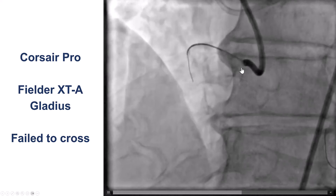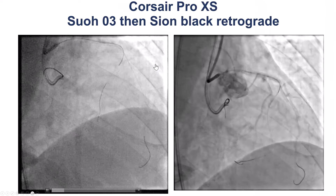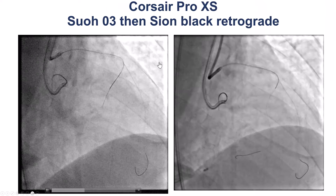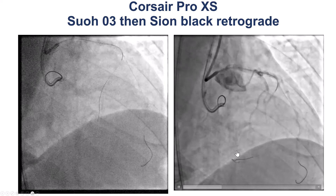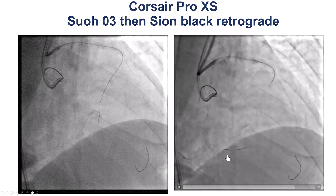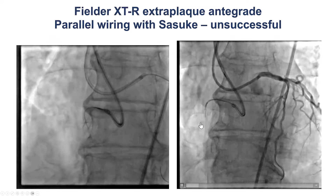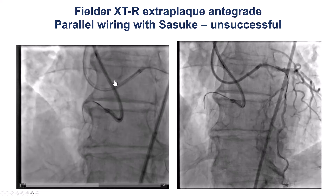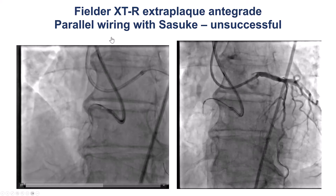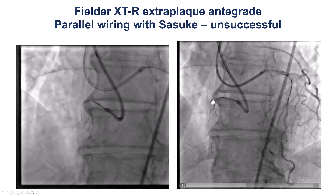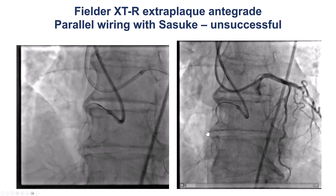We tried antegrade wiring with polymer-jacketed wires, but this was not successful. So we switched to the retrograde approach. Despite trying a SU-03 as well as a Sion Black guidewire, we were actually unable to cross distally. We did have a safety wire into the LAD for protection. We then went back in the antegrade direction and tried parallel wiring. The wire was in the extraplaque space, but once again we did not have good luck with crossing.